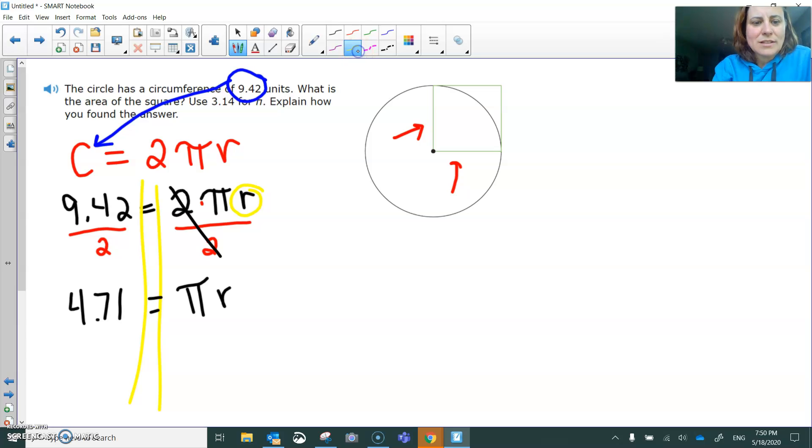Then our goal is to still get r by itself. So the next thing we're going to do, right now r is being multiplied by π. And the opposite of multiplying by π is dividing by π. And we're going to do that on both sides. It's 4.71 divided by π, and they asked us to use 3.14.